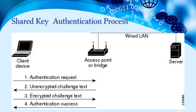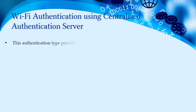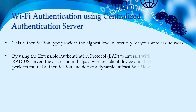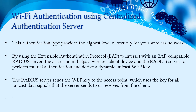This diagram illustrates the shared key authentication process. The client device sends an authentication request to the access point. The access point sends the unencrypted challenge text to the client, which encrypts the text and returns it. Once this is successfully completed, the authentication process is finished.